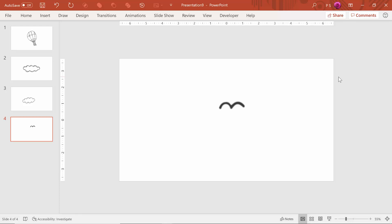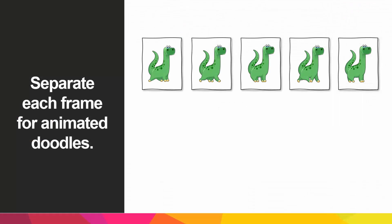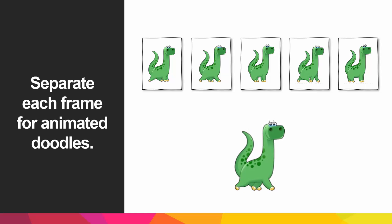In Doodle Lens, what's cool is you can animate your doodles as well. For that, simply separate each animation frame on a separate sheet or slide, and then when we put them together in the app, they'll all look animated. So once you have your doodles and any animation frames put together, we're now ready for step three, which is putting these into the real world.